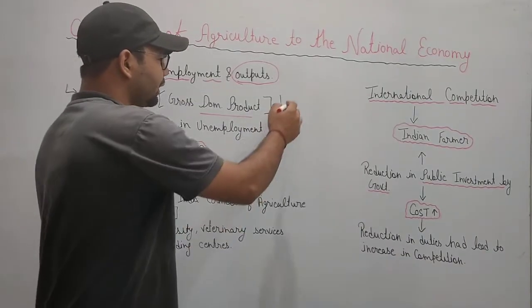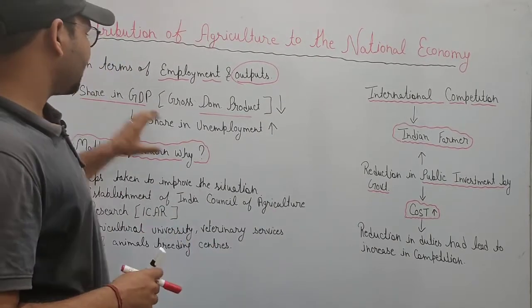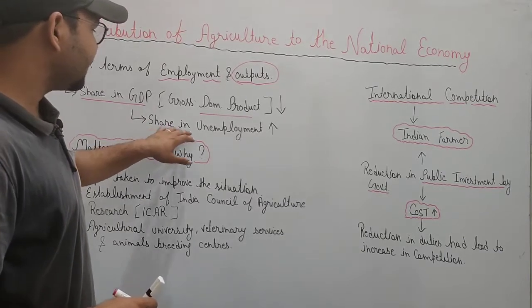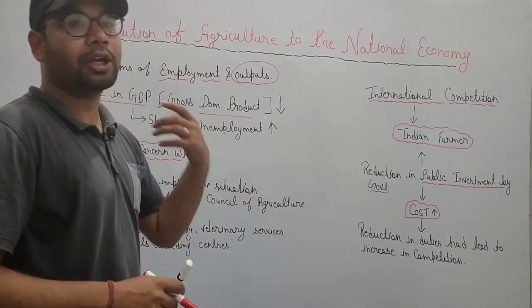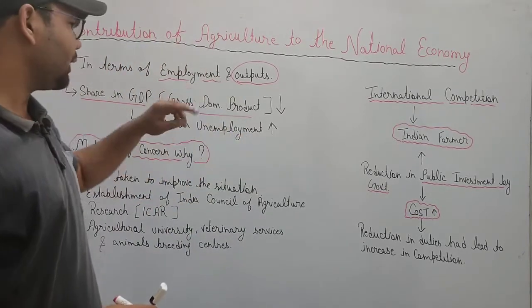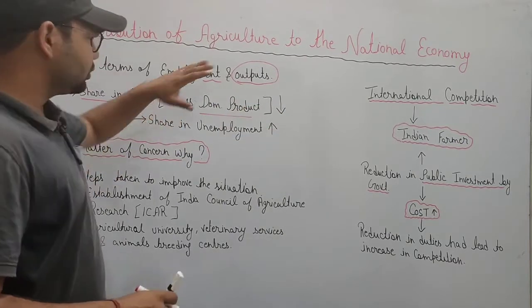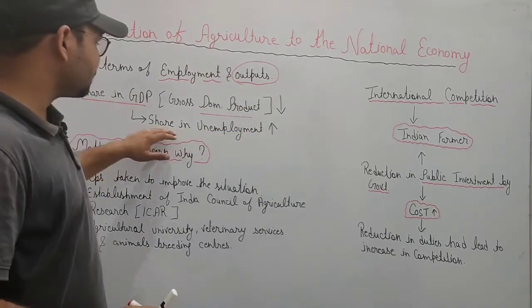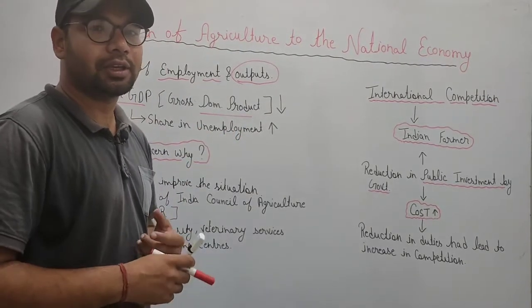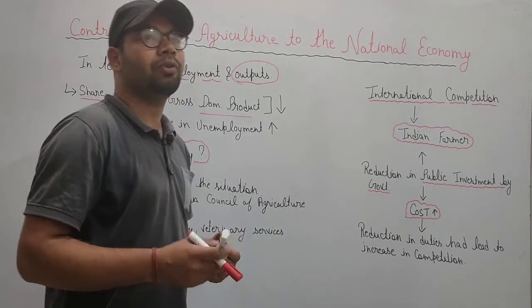Under output we will look at GDP. First, talking about GDP — Gross Domestic Product — its full form. Agriculture's share in GDP is continuously decreasing. And the share in employment — those without jobs — that condition is worsening. GDP share is continuously decreasing while share in employment is increasing.